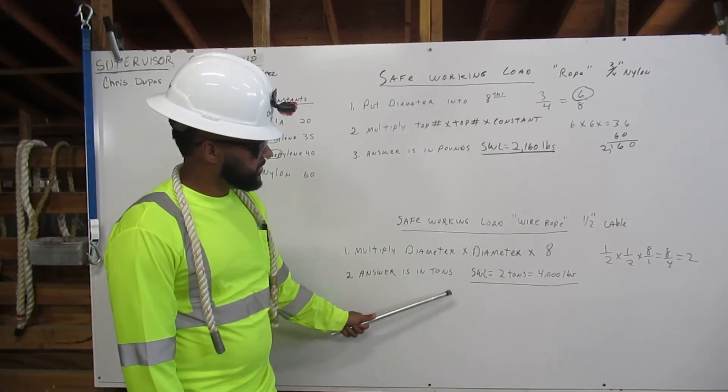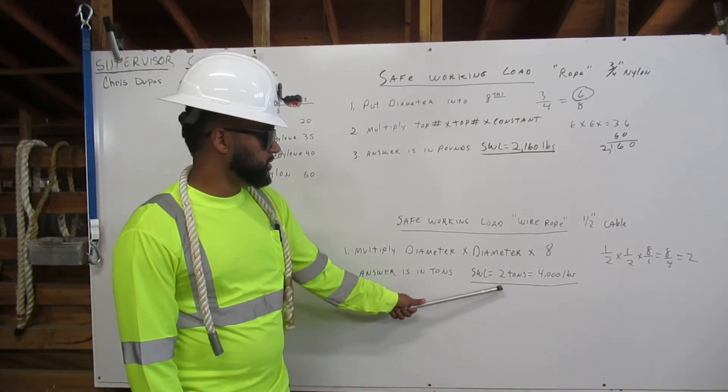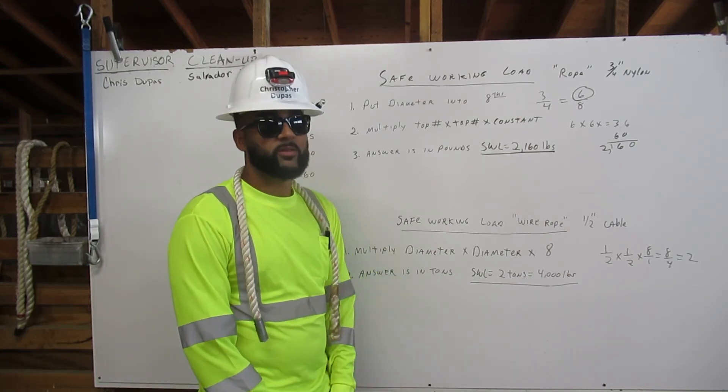The answer is in tons. Safe working load equals two tons, which is 4,000 pounds. Thank you.